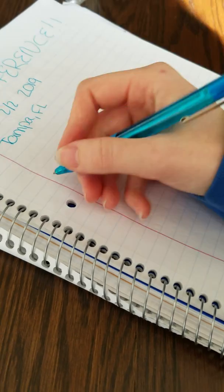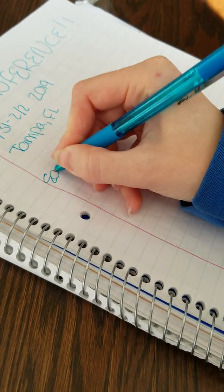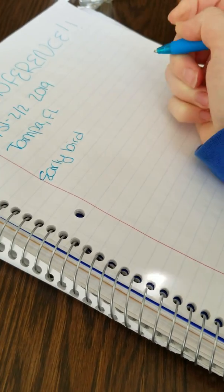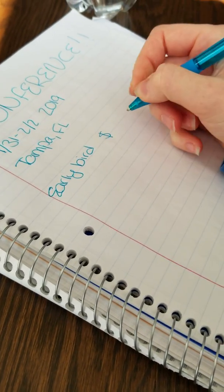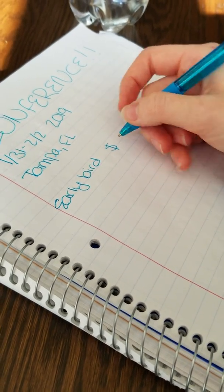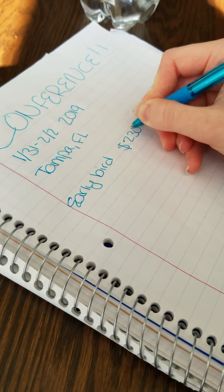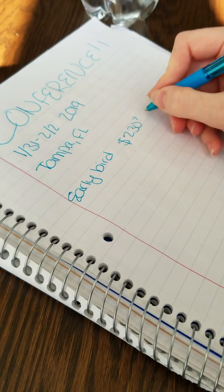Right now the tickets are on sale for early bird pricing. It's like $230 one time, or it's like $125 two times.